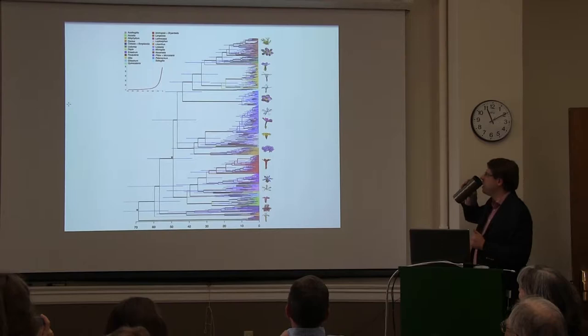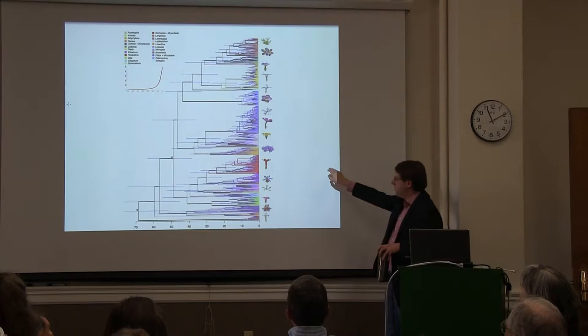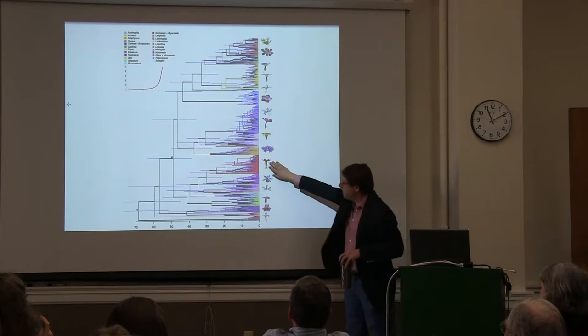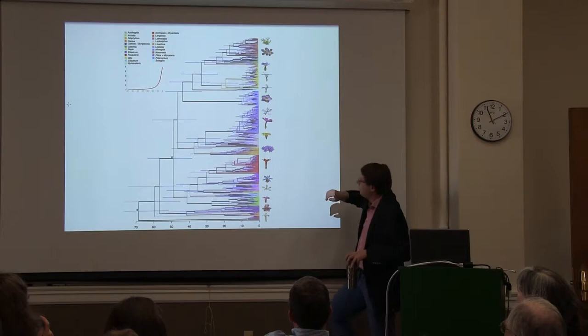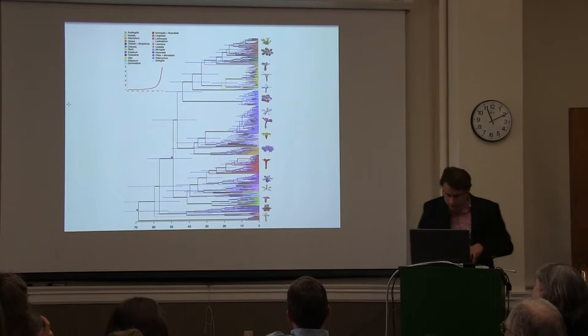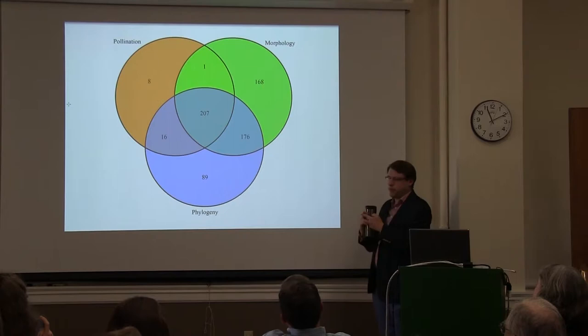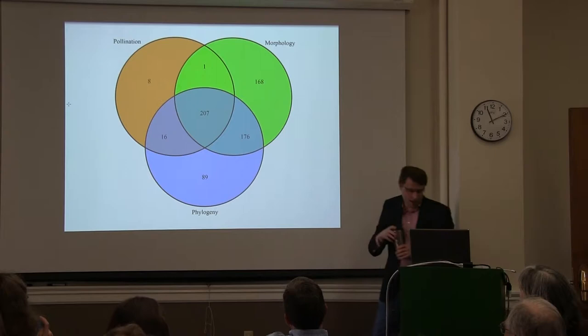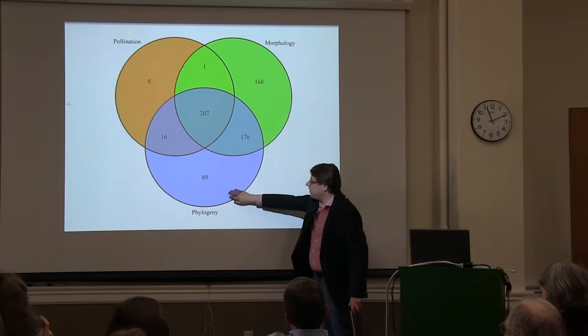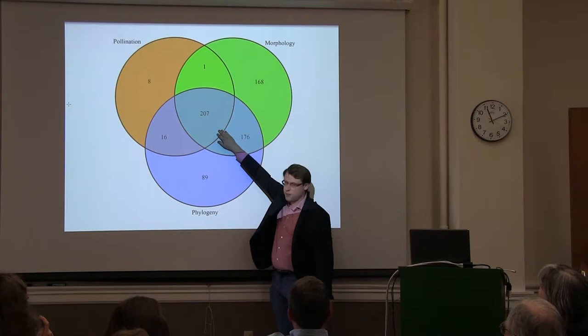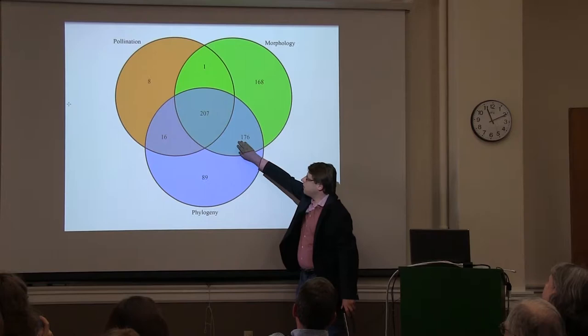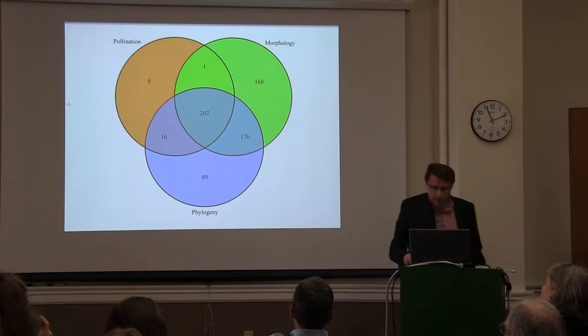This is our phylogenetic context, color-coded by clade. We have hummingbird-pollinated plants here, and bat-pollinated plants down here — this will be important later. In terms of overlap, we have pollinator data, morphological data, and phylogenetic data. What we are most interested in is: we have 207 species overlapping in all three categories, about 380 that overlap between morphological and phylogenetic data sets, and about 220 species where we have pollinator data.